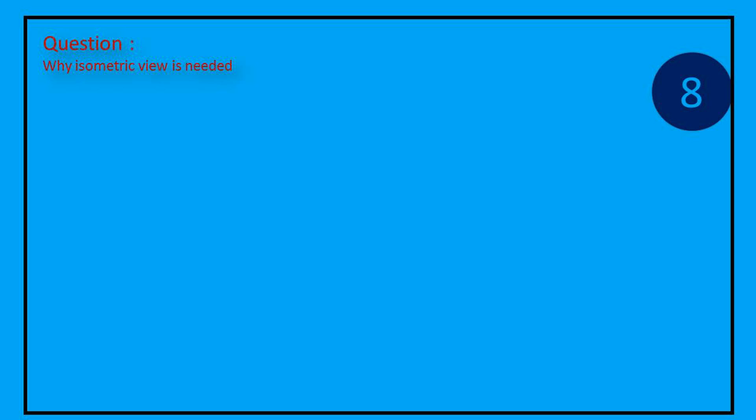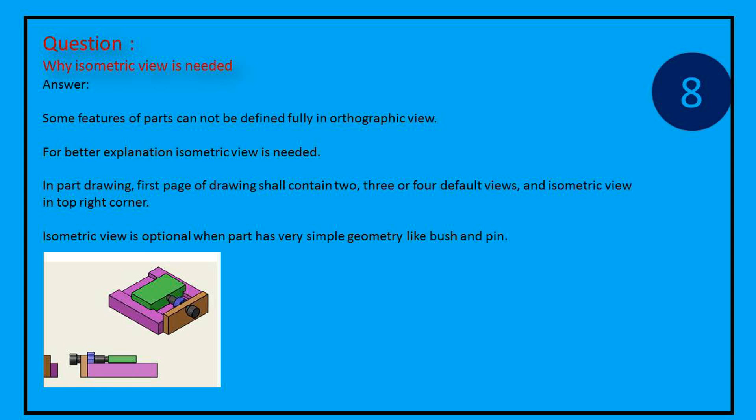Question: Why isometric view is needed? Answer: Some features of parts can not be defined fully in orthographic view. For better explanation isometric view is needed.